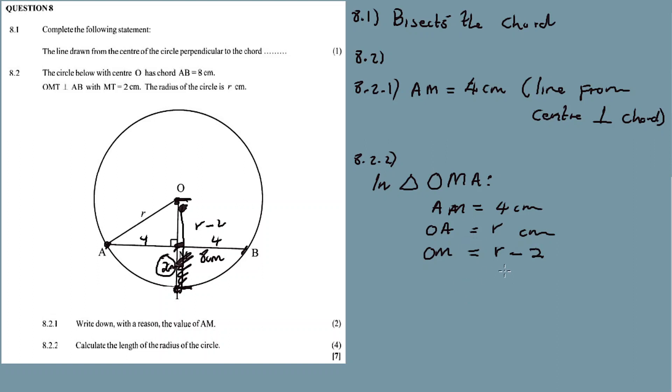Now I can apply Pythagoras theorem to calculate R. OA squared is equal to OM squared plus AM squared. What is OA? It's R squared. Equal to, what is OM? R minus 2 squared plus what is AM? 4 squared. So it's R squared equal to, multiply out this: R squared minus 4R plus 4 plus 16.